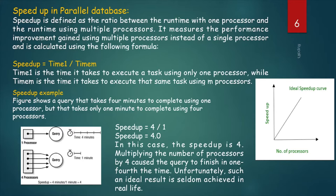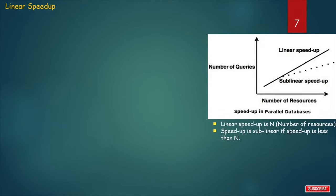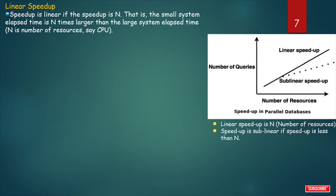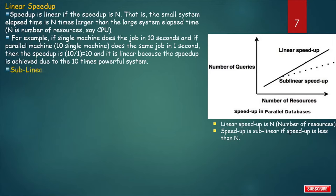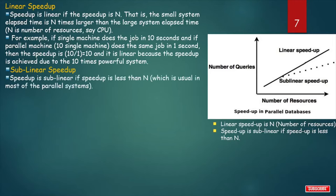Unfortunately, such an ideal result is seldom achieved in real life. Speedup can be linear or sublinear. Speedup is linear if the speedup equals n, where n is the number of resources (e.g., CPUs), meaning the small system elapsed time is n times larger than the large system elapsed time. Speedup is sublinear if speedup is less than n, which is usual in most parallel systems.